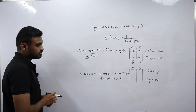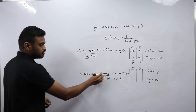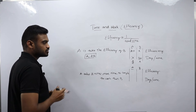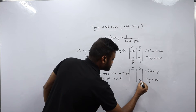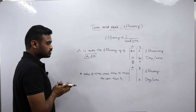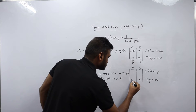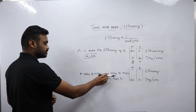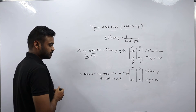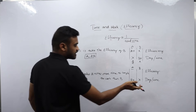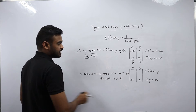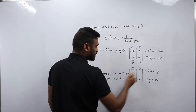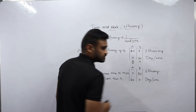For example 2, if B takes x-dash to complete the work, A takes 2x days since A takes 2 times more time than B. In terms of efficiency, since efficiency and total time are inversely proportional, the efficiency of A and B will become x and 2x.